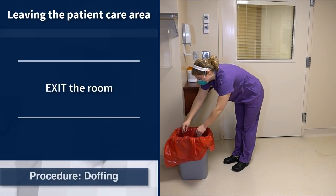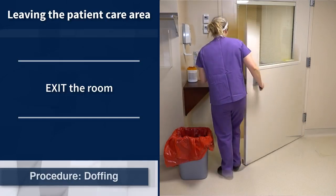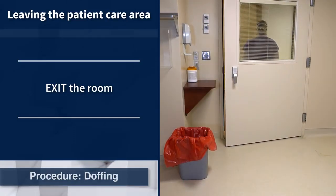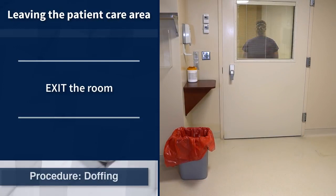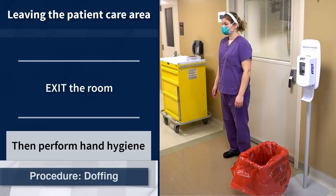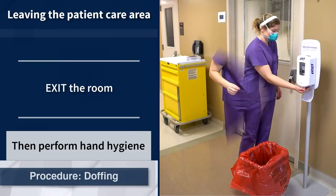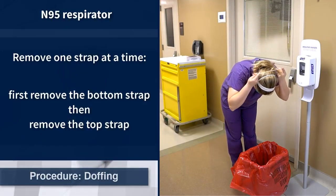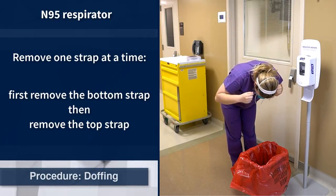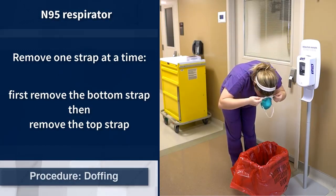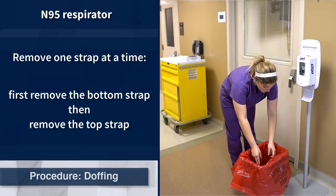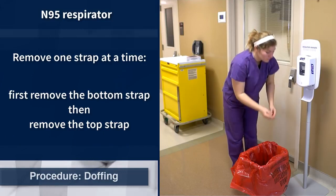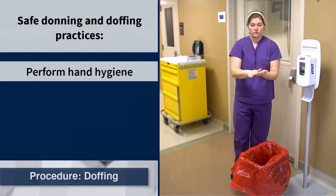The only item of personal protective equipment remaining at this time should be the N95 respirator. Exit the patient care room by opening the door and step out. Ensure the door closes immediately and completely. Perform hand hygiene. To remove the N95 respirator, pull one strap at a time over the head beginning with the bottom strap. As the top strap is removed, keep hold of the strap and use it to guide the N95 respirator into the trash. Perform hand hygiene.